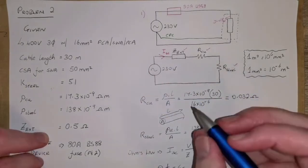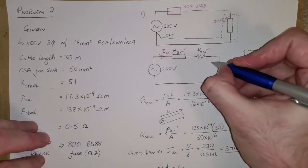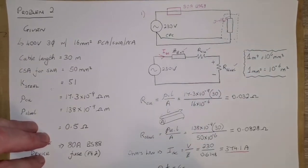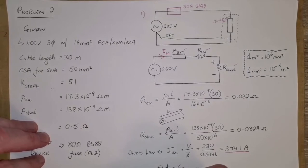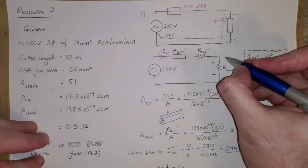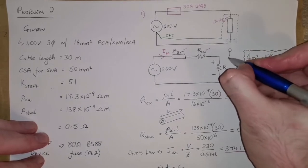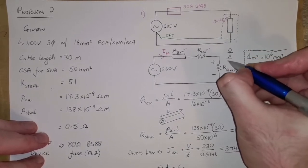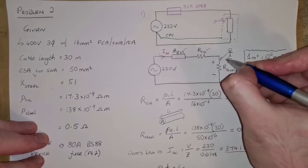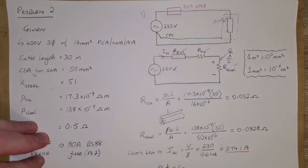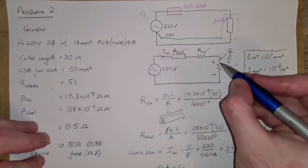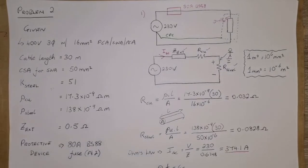And what we're essentially trying to work out here is what would the voltage drop be across the circuit protective conductor. So if somebody was to make contact with that part of the circuit, which is the frame of the motor at this point, what voltage are they going to be subjected to?